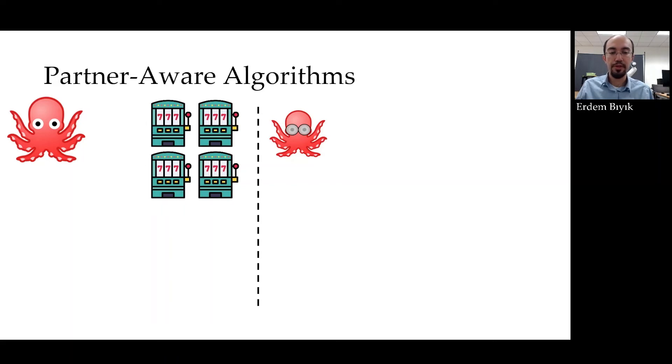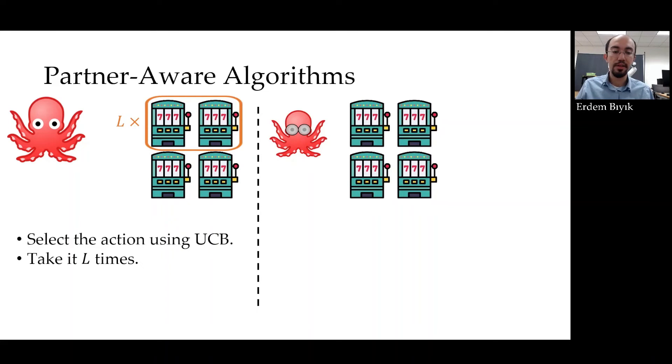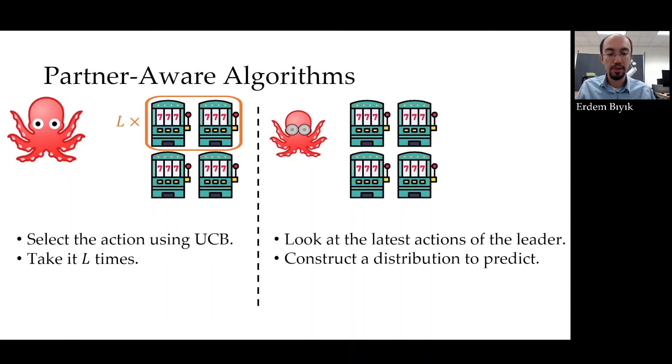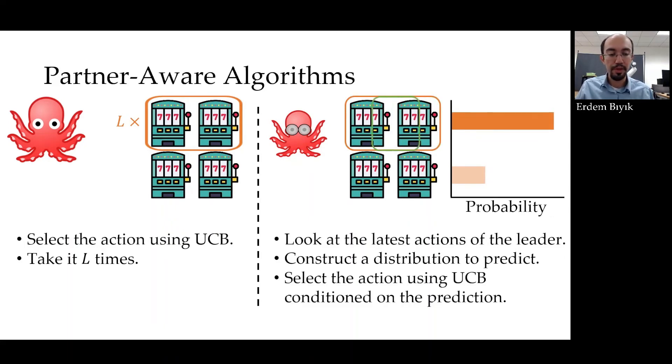Let me give you a description of our partner-aware algorithm. In this algorithm, the leader is still going to perform the standard UCB. But it will repeat each action L times. This is only for analysis. In reality, the leader can use other algorithms like Thompson sampling and may not do the repetitive actions. And we still get sublinear regret. The follower has a slightly more sophisticated algorithm because it is the one who is going to model the leader and act accordingly. For this, it will first look at the latest actions of the leader and based on those, it will predict its next action in a frequentest way. It will then apply UCB conditioned on this predicted leader action. Again, this is also for analysis and we can replace the UCB here with other algorithms.